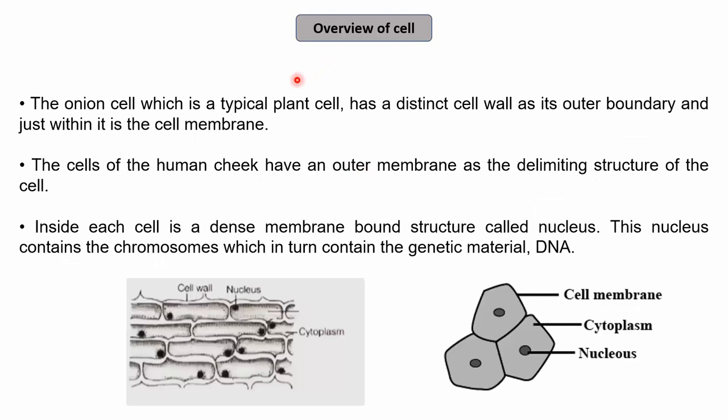This is the overview of a cell. Two examples have been described: the first is onion peel cells, which are examples of plant cells, and the second is human cheek cells, which are examples of animal cells.